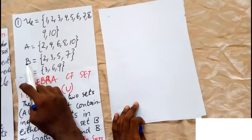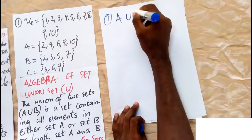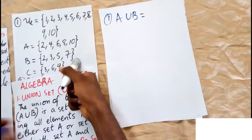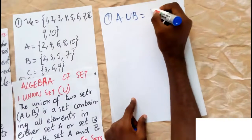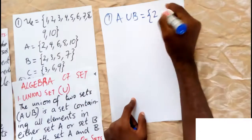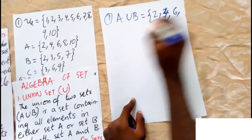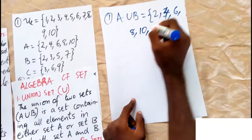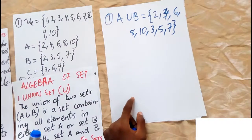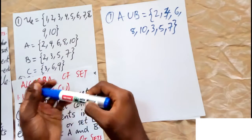We have set B as well. The union of set A and B will contain all elements in A and all elements in B, but we are not going to repeat any element. So we have 4, 6, 8, 10 from A, then 3, 5, 7 from B — we will not write 2 again since it's already written. It is the set of elements in A or in B or in both.